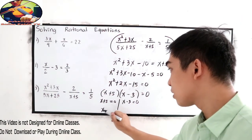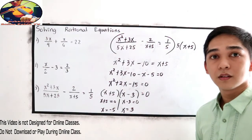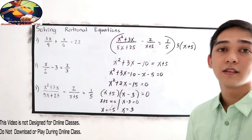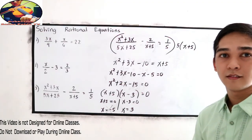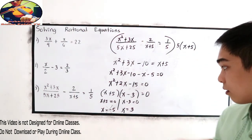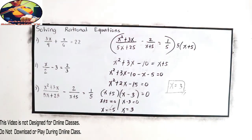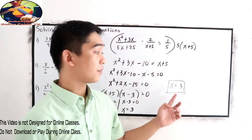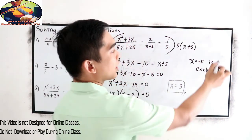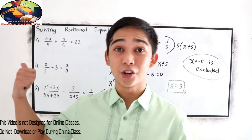Solving: x plus 5 equals 0 gives x equals negative 5, and x minus 3 equals 0 gives x equals positive 3. Take note that negative 5 is excluded because it is not part of our domain — it is the restricted value. Therefore the only solution for number three is x equals positive 3. Thank you for watching Senior Pablo TV. This is solving rational equations.